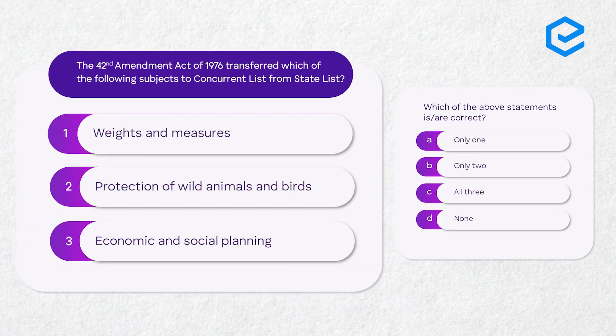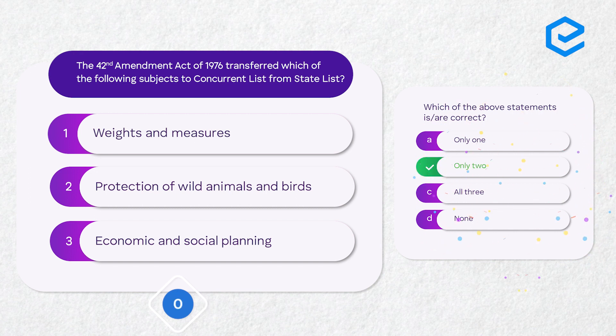The next question: the 42nd Amendment Act of 1976 transferred which of the following subjects to the concurrent list from the state list? Option one: weights and measures. Option two: protection of wild animals and birds. Option three: economic and social planning. The correct answer is only two.